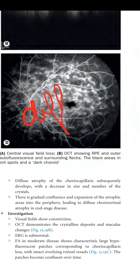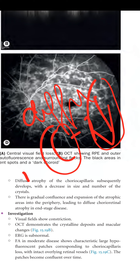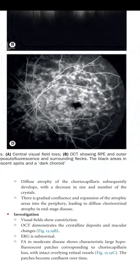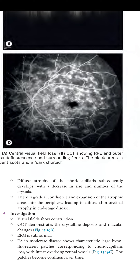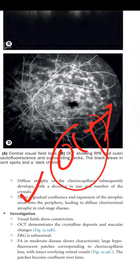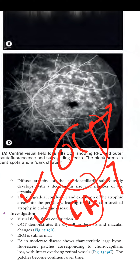Diffuse atrophy of the choriocapillaris subsequently develops with a decrease in size and number of crystals. There is gradual confluence and expansion of atrophic areas into the periphery, leading to diffuse choreoretinal atrophy in end-stage disease. Investigations: visual field shows constriction; OCT demonstrates crystalline deposits and macular changes; ERG is subnormal; FA in moderate disease shows characteristic large hypo-fluorescent patches corresponding to choriocapillaris loss with intact overlying retinal vessels.